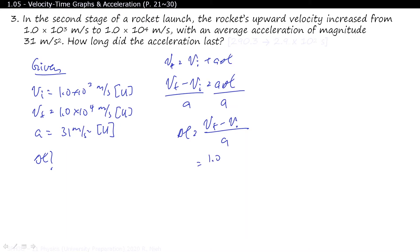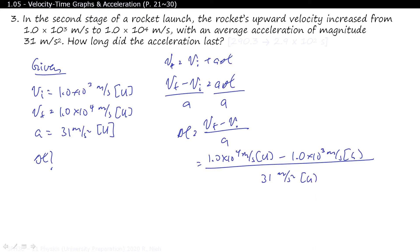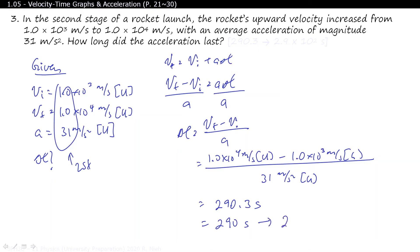So ΔT = (10,000 m/s − 1,000 m/s) / 31 m/s² upward. Our initial answer is 290.3 seconds. Since all givens are 2 sig figs, the final answer should also be 2 sig figs: 290 seconds. However, 290 could be 2 or 3 sig figs, so the best representation is scientific notation: 2.9 × 10² seconds — clearly 2 sig figs.